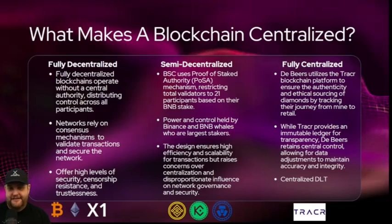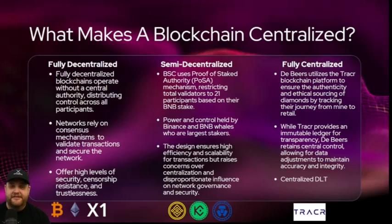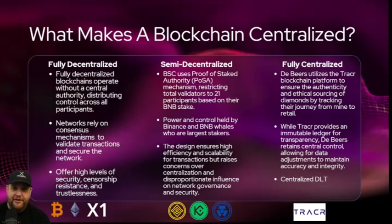There are also semi-decentralized protocols. Binance Smart Chain uses a proof of staked authority mechanism, restricting total validators to only 21 participants based on their BNB stake. Only 21 nodes are validating all the transactions, and you can't just become a node on Binance — you need enough BNB. So all the power and control are held by Binance and all the BNB whales who are the largest stakers controlling the network.